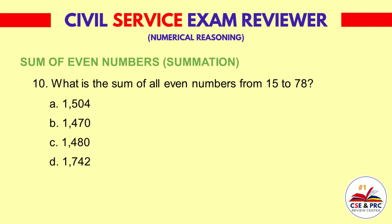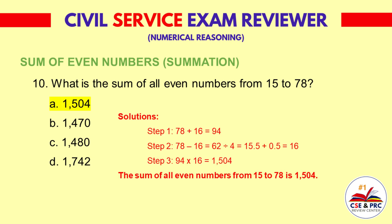Question 10: What is the sum of all even numbers from 15 to 78? a. 1,504  b. 1,470  c. 1,480  d. 1,742. The answer is a. 1,504.